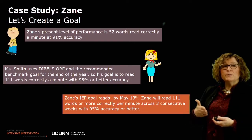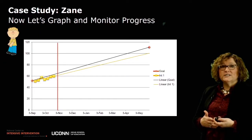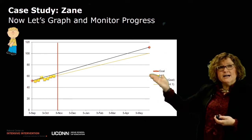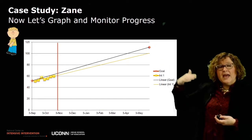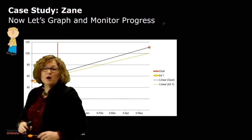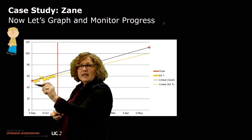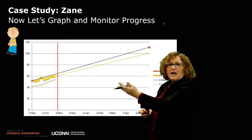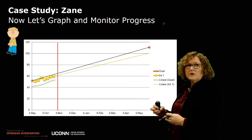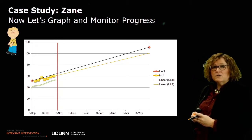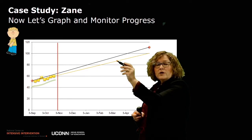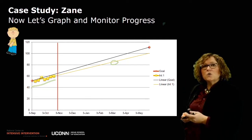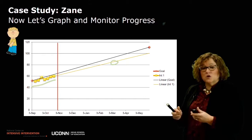Here's what this looks like in graph format. His goal is represented out in May. She's going to start collecting ongoing progress monitoring data for Zane — ideally on a weekly basis. You can see that data represented here. She's collecting that data and then looking at how it compares to the goal line set for Zane. The yellow trend line is compared to the goal line to make decisions about how he's progressing in the current instruction she's providing.